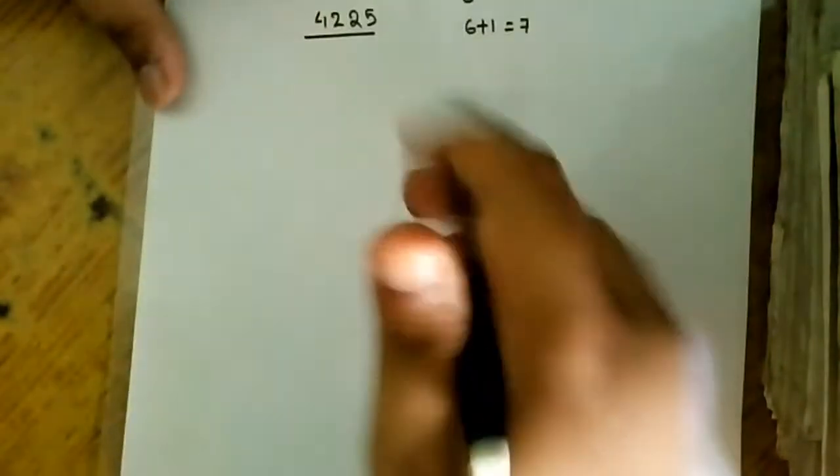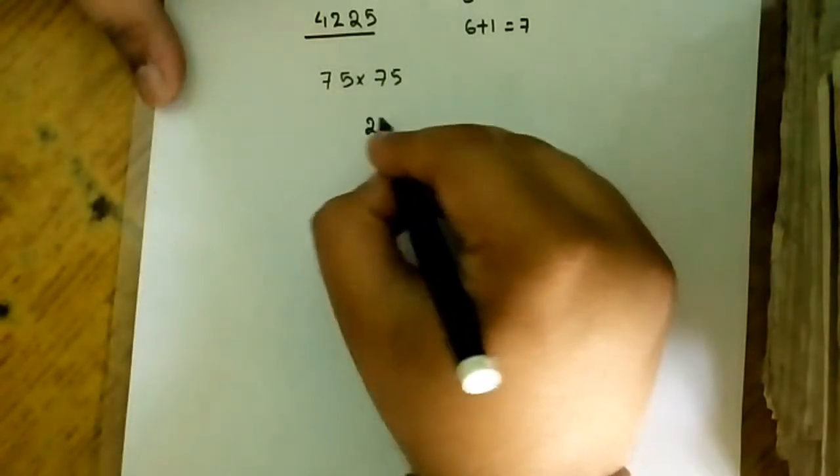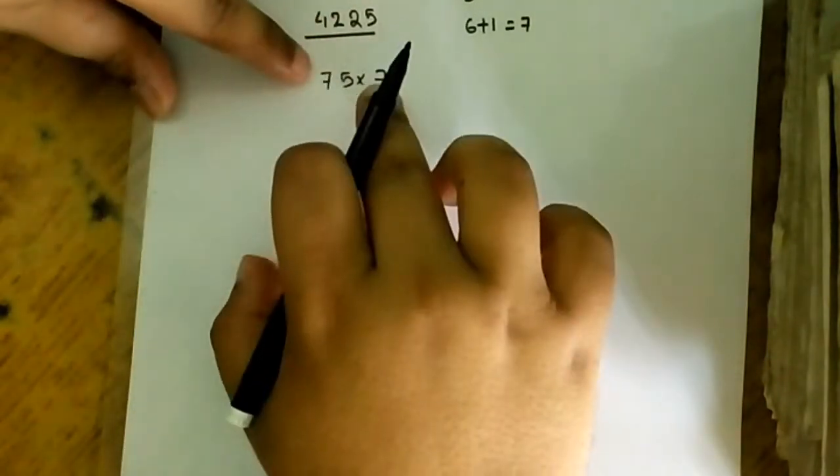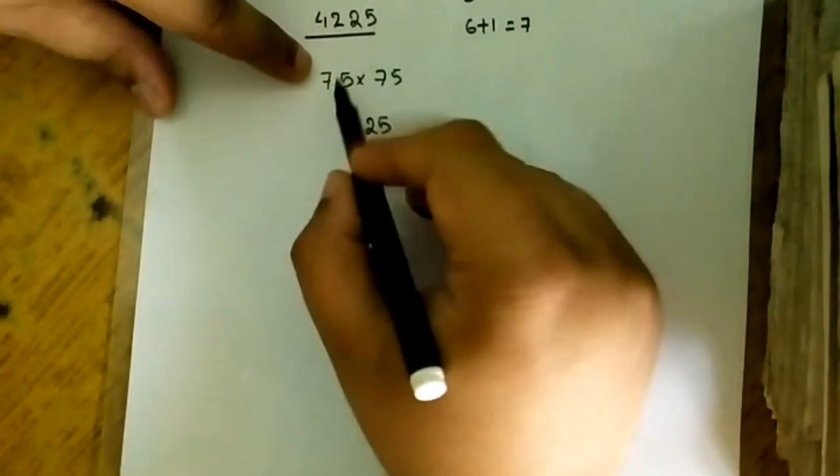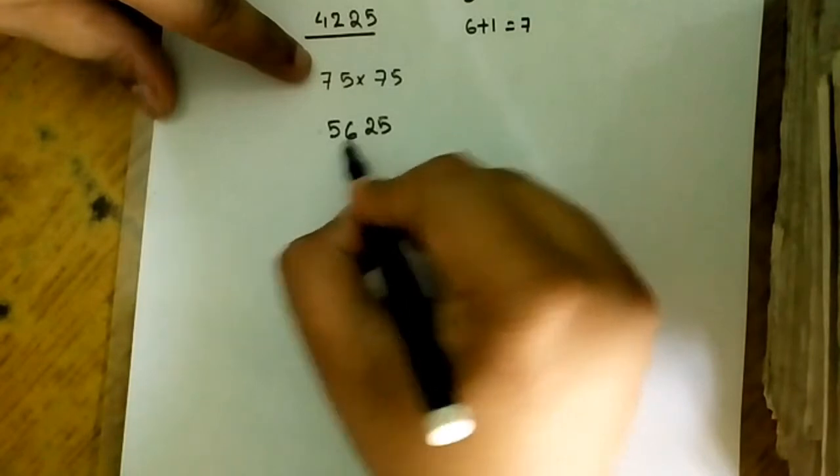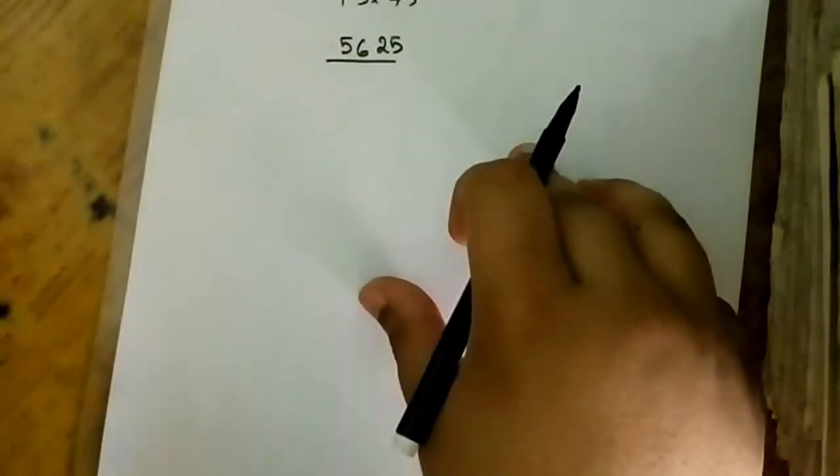Let's take another example: 75 into 75. Again, 5 into 5 is equal to 25. Now 7 and 7. I will add 1 with any 7, that is 7 plus 1 equals 8, and 8 into 7 is equal to 56. This is the required answer.